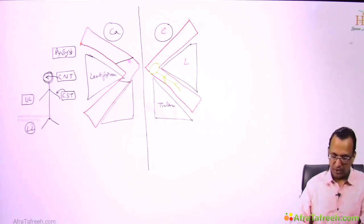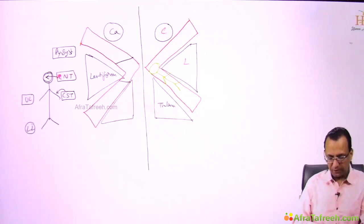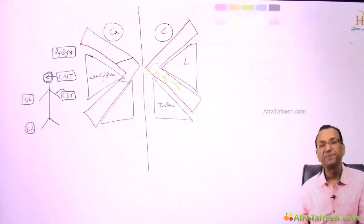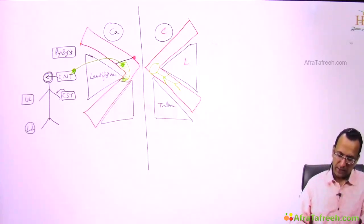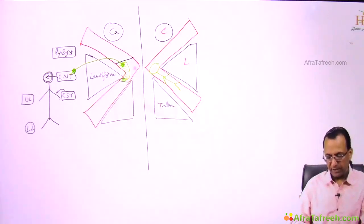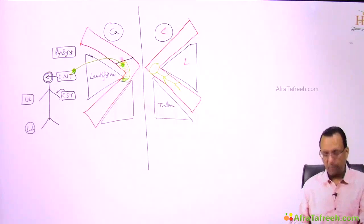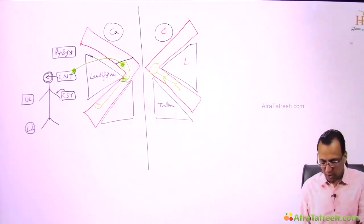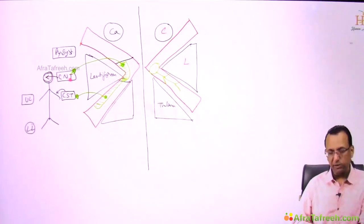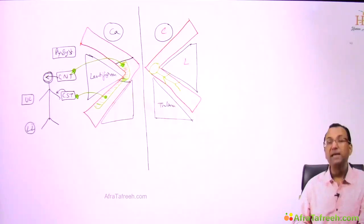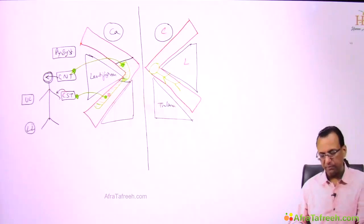The corticospinal tract is in the posterior limb, also more laterally. When you touch the face, the trigeminal pathway is activated, passing through the genu medially. When you touch the upper or lower limb, two tracts are activated: the dorsal column of the spinal cord and the spinothalamic tract — both passing through the posterior limb of the internal capsule, more medially. So sensory fibers are more medial throughout.